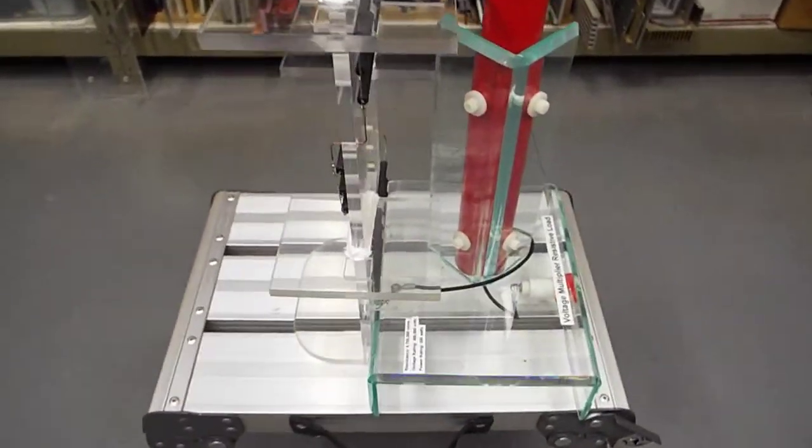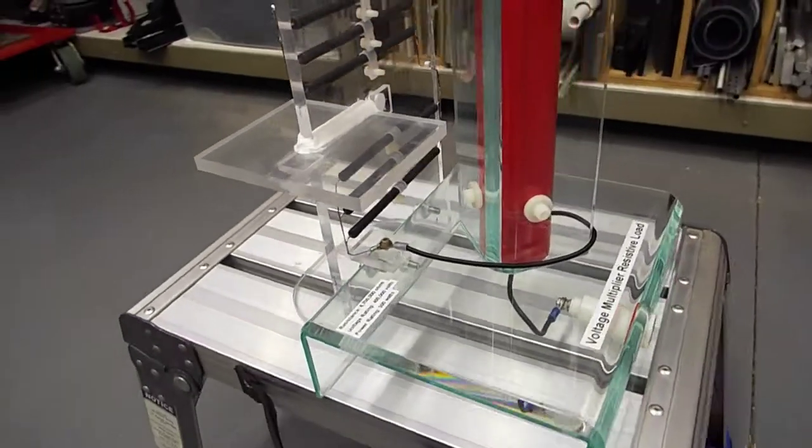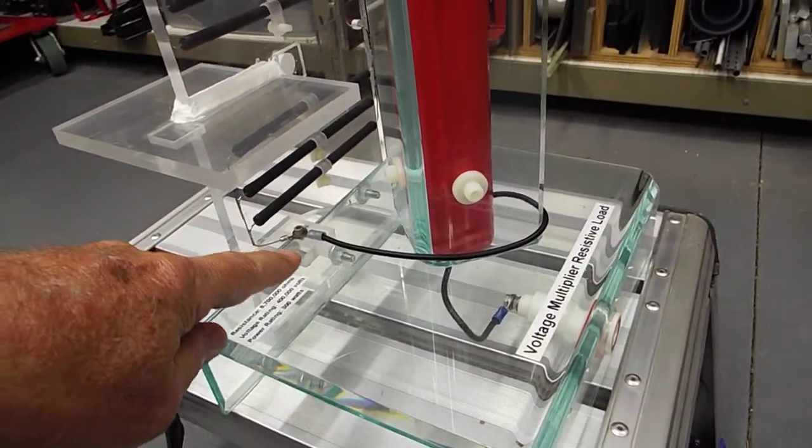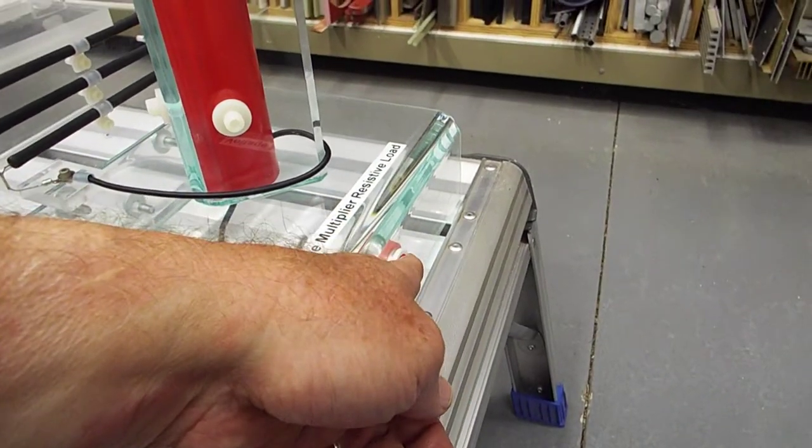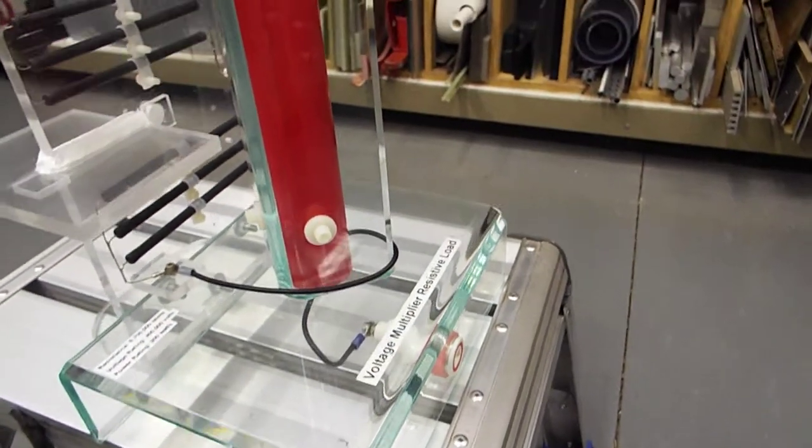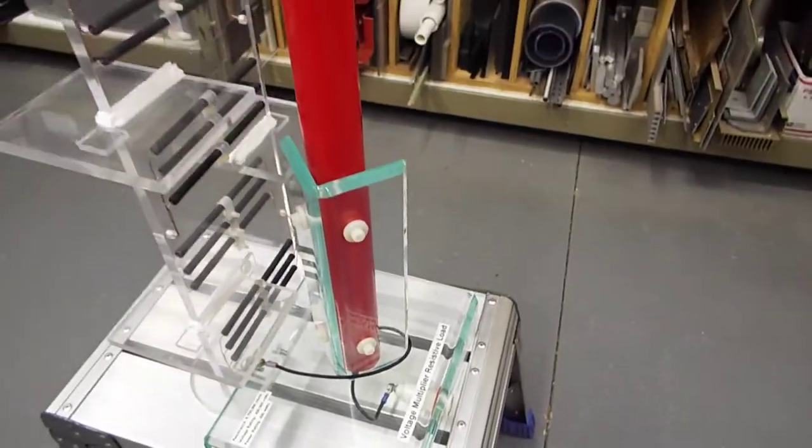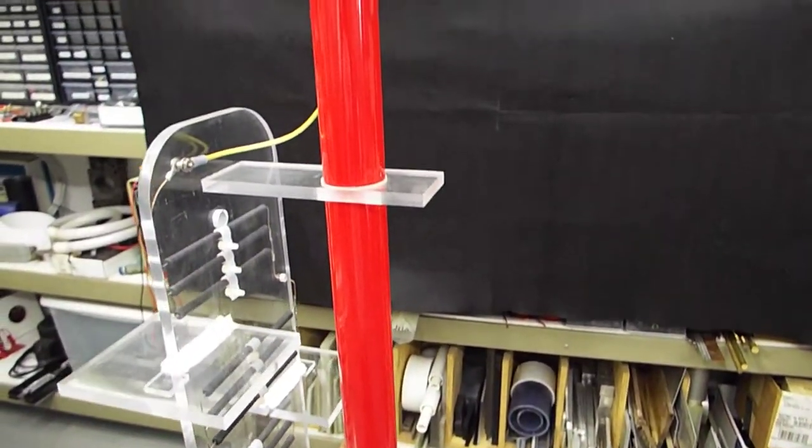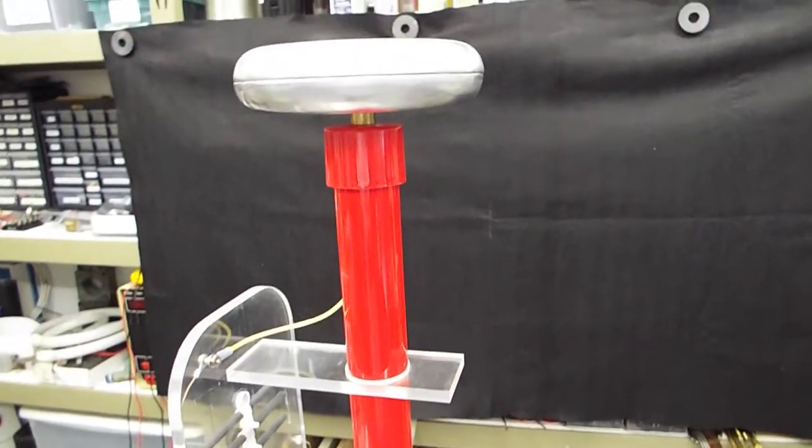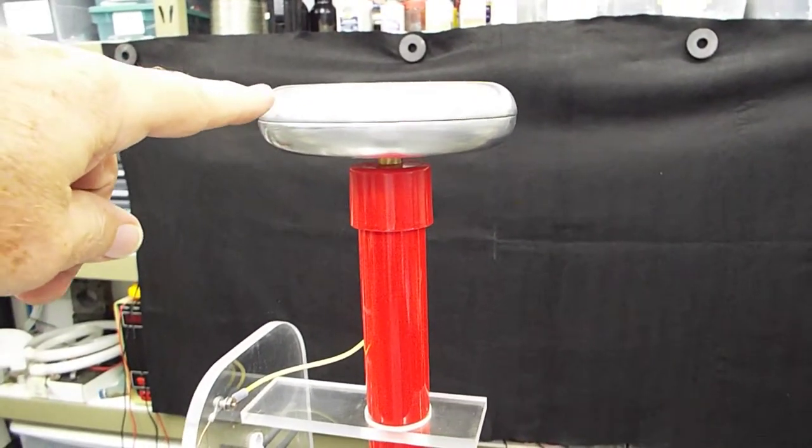Down at the bottom, the bottom set of resistors is connected to a terminal which ultimately gets connected to ground. The red pole is just a PVC pipe - it's just a support to get the discharge terminal up at the same height as the Cockroft Walton voltage multiplier.